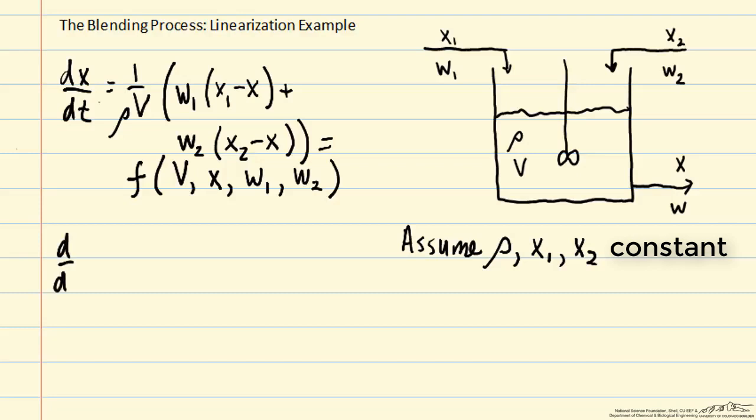For the left-hand side, we'll substitute in deviation variables. So instead of x, we'll have x̄, the steady-state value, plus x', the deviation from steady state. And because x̄ is a constant, we can then simplify that to dx'/dt. So the deviation is time-varying, but the steady-state value is a constant.